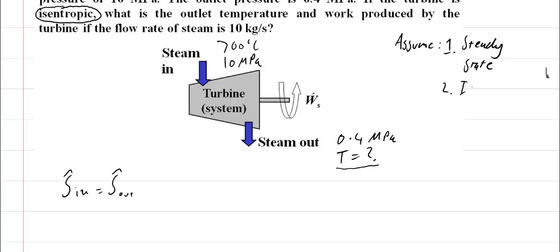Two, it's isentropic as we're told, and three, it's pure steam, so there are no contaminants in this system.